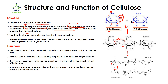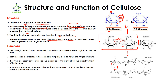Two beta glucose molecules join together to form cellobiose. When two glucose molecules combine, the structure formed is known as cellobiose, in which the two glucose molecules are attached with each other by the help of a glycosidic bond. Cellulose is degraded by the action of three different types of enzymes.